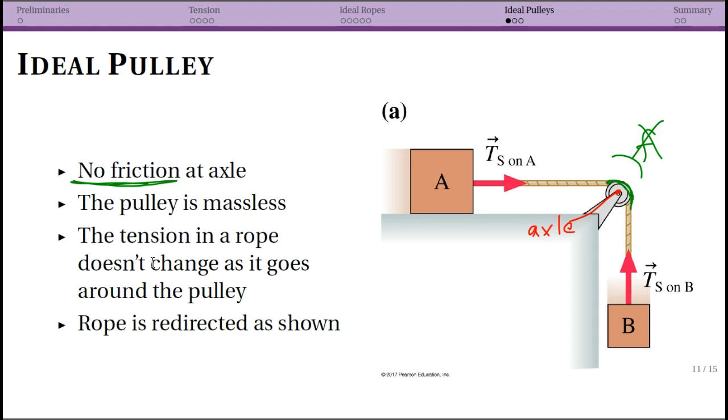The tension in the rope is not changing as it goes around the pulley. The tension here is all the same. It goes around the pulley and the tension keeps being the same. Think about that little ball and spring model that all of these molecules are all stretching the spring in the same way throughout the entire rope.